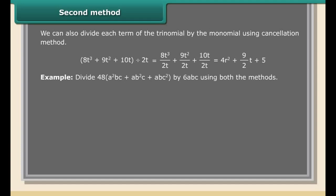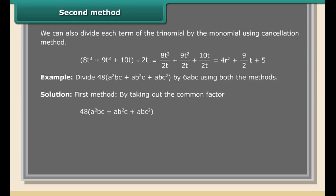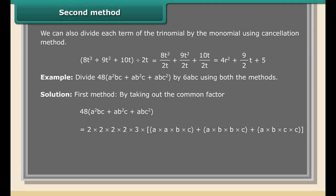Second method: we divide each term of the trinomial by the monomial using the cancellation method. (8t³ + 9t² + 10t) ÷ 2t = 8t³/2t + 9t²/2t + 10t/2t = 4t² + 9t/2 + 5.